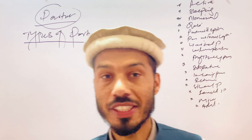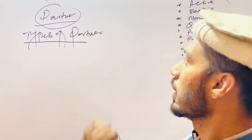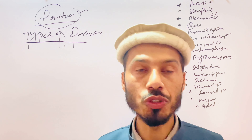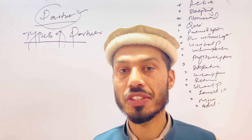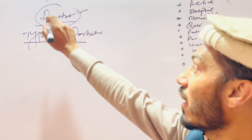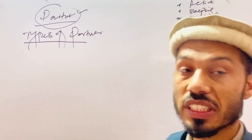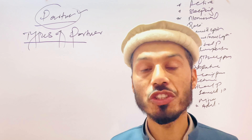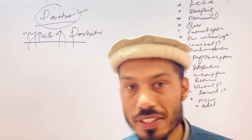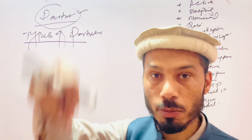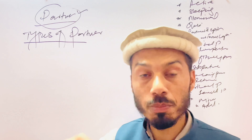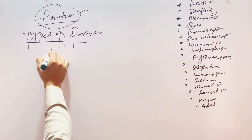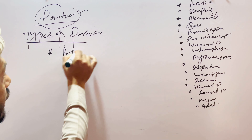Welcome to my channel. Today I discuss the topic of partners. What is a partner? A partner is an individual who participates in the starting of a partnership business. Those types of individuals are called partners. There are certain types of partners. The first one is the active partner.